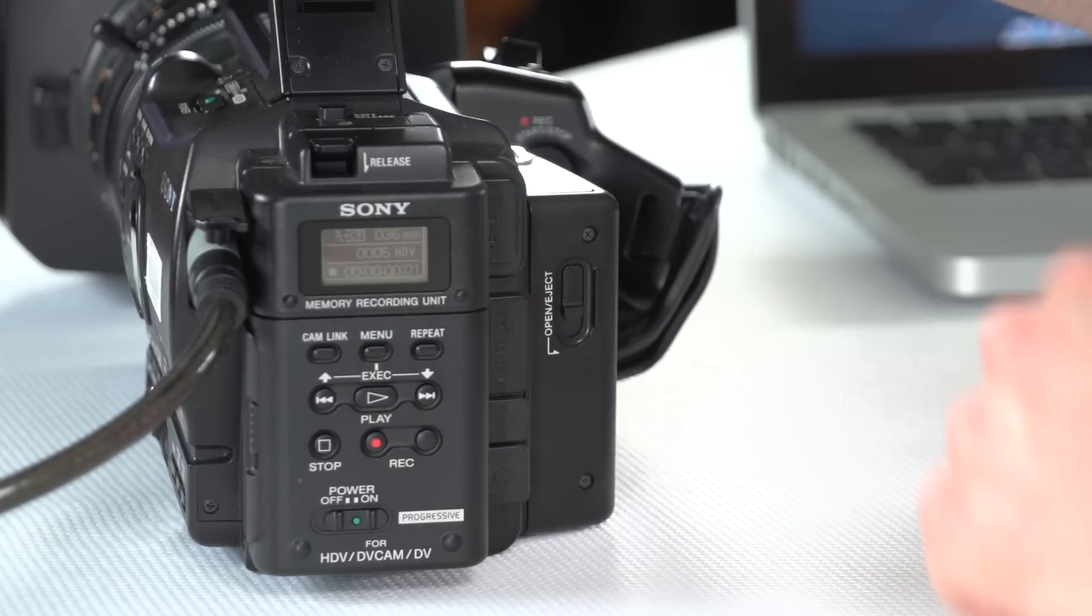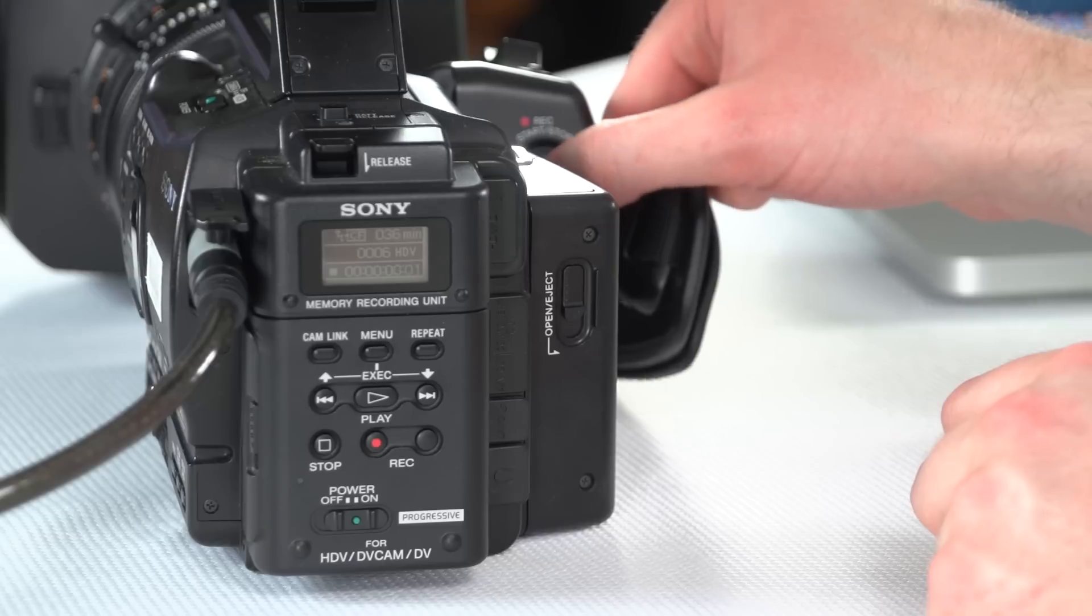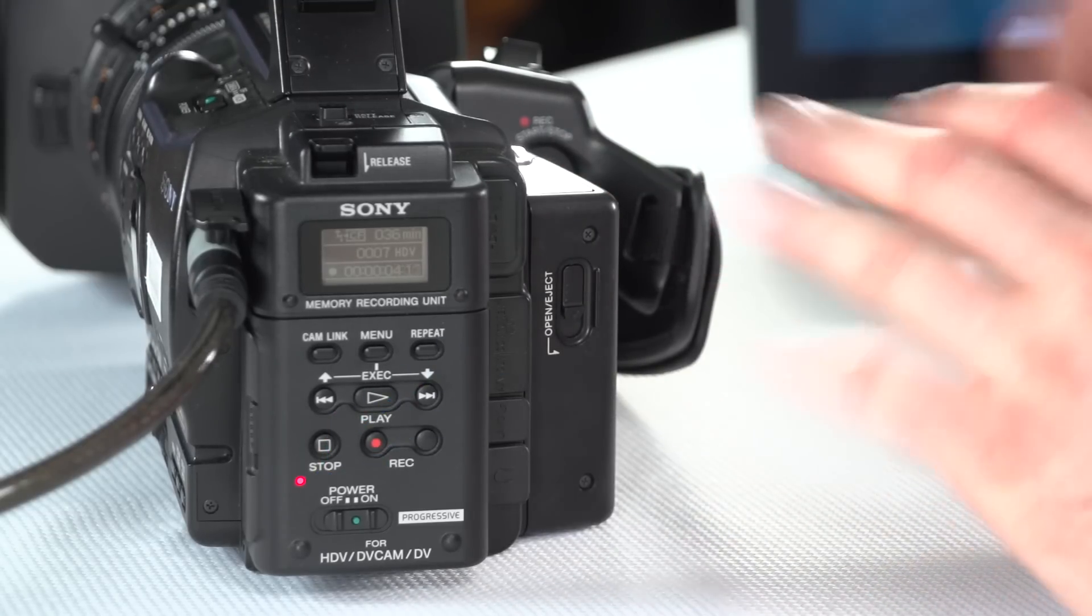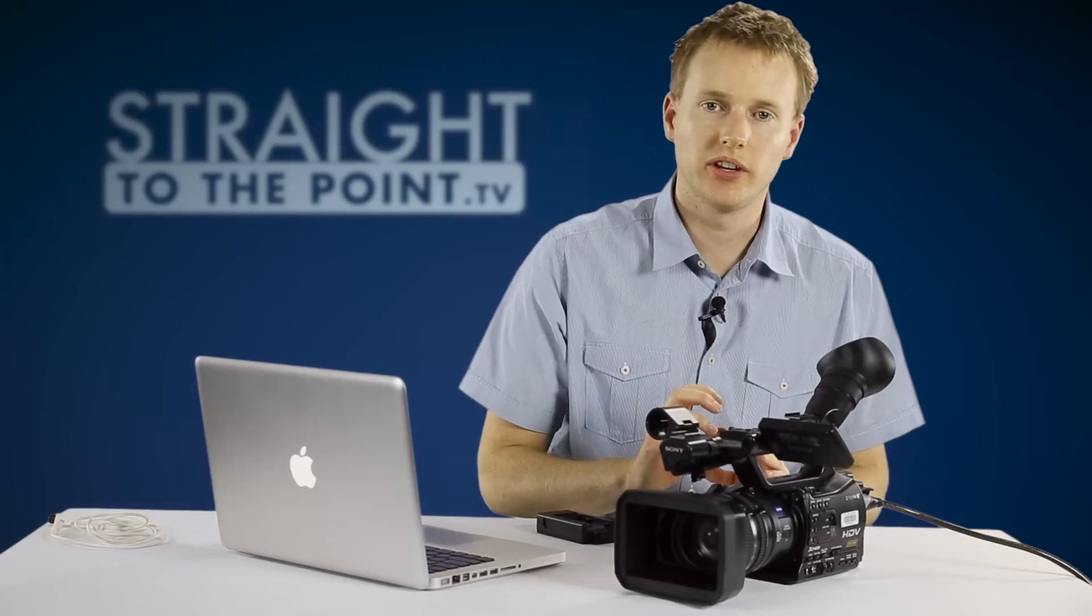So set it up to synchronous or ensure it's set to synchronous and hit the play button to select that. Then we can go back out of the menu. So now if I was to push record on the back of the camera, we'll see the little light comes on at the back of the memory card recorder indicating that it is recording.